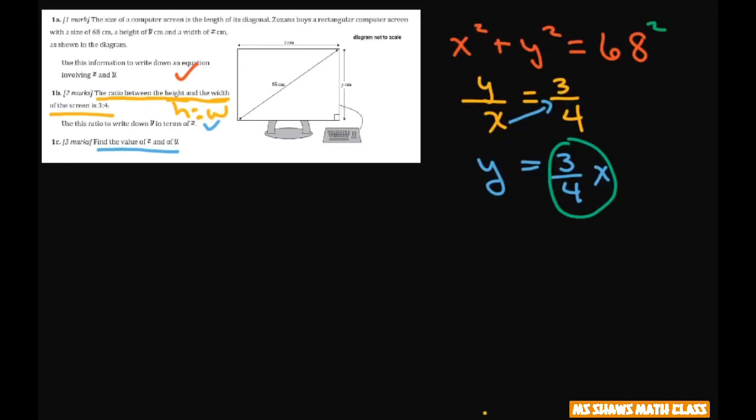So set it up and we're going to just do substitution x squared plus y squared equals 68 squared. And our y is 3 fourths x.